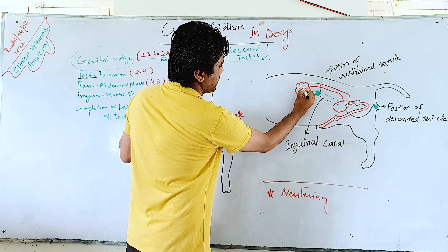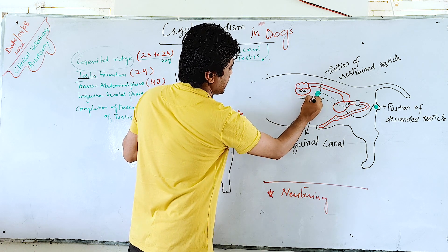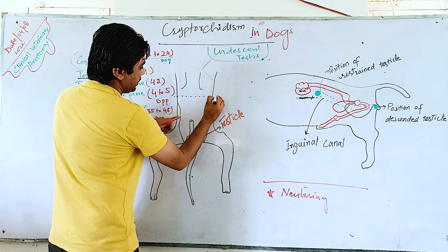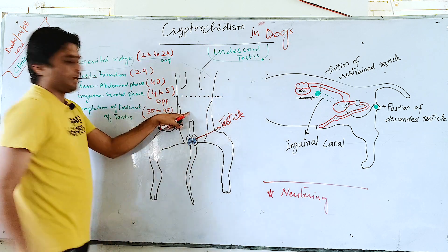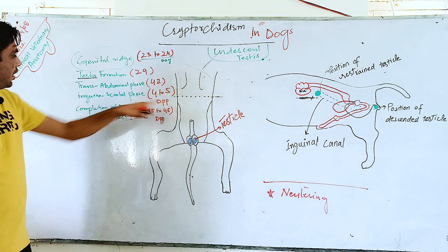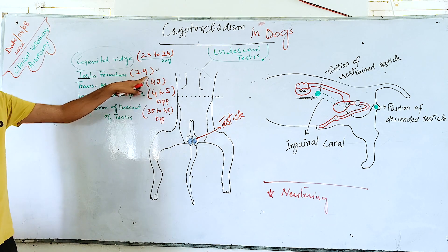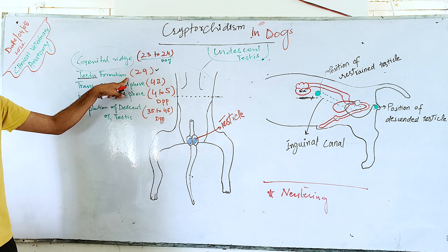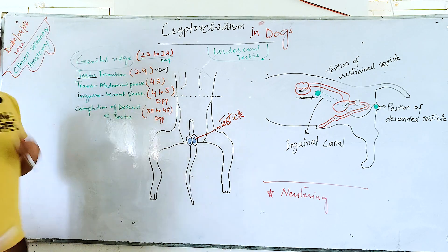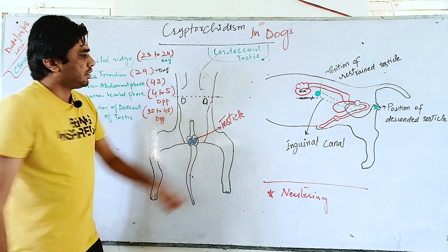From the genital ridge we have the formation of the testis. This is actually happening within the abdomen, near the level of the kidney. As shown in this diagram, the testis structure develops here, so the formation of the testis is occurring on the lumbar level, near or below the kidneys. On day 25, the formation of the testis is complete from the genital ridge.